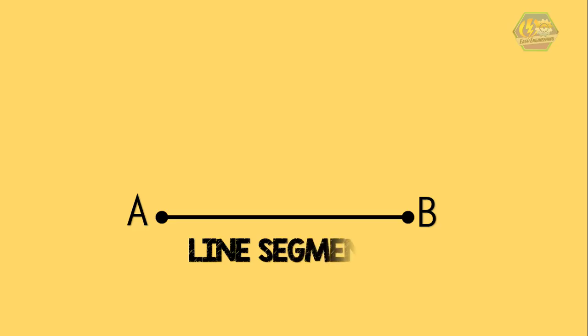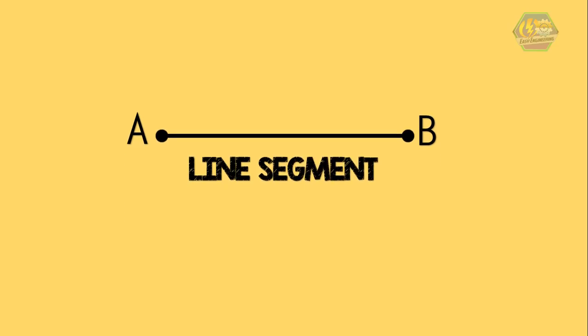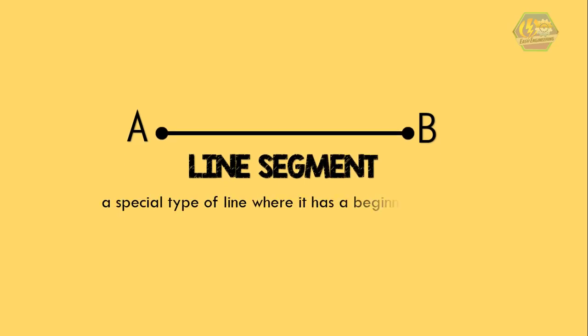Instead, it is called a line segment. A line segment is a special type of line where it has a beginning and an end. So in this example, it starts at point A and ends at point B, and therefore it is called line segment AB.